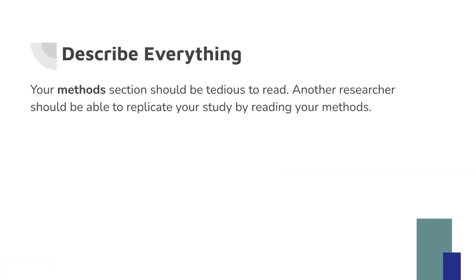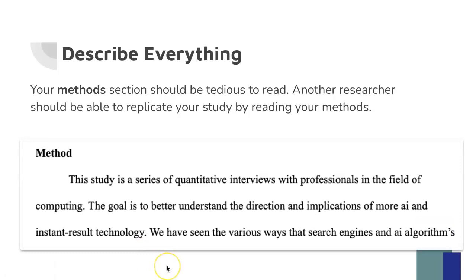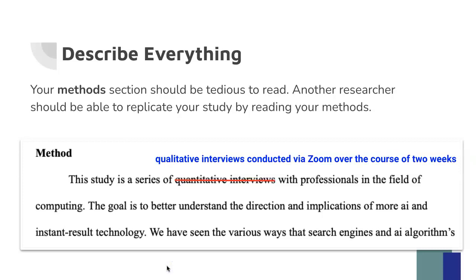The last area where students tend to struggle in the MRAD methods and results sections is describing everything. Your methods section should be tedious to read — another researcher should be able to replicate your study by reading it. For example, one student wrote 'this study is a series of quantitative interviews with professionals' — that's not detailed enough. A better version would be: 'the study is a series of qualitative interviews conducted via Zoom over the course of two weeks.' That's the level of detail I want in your methods section.